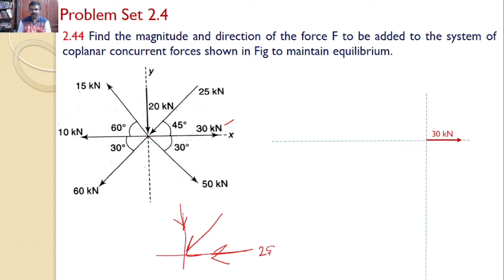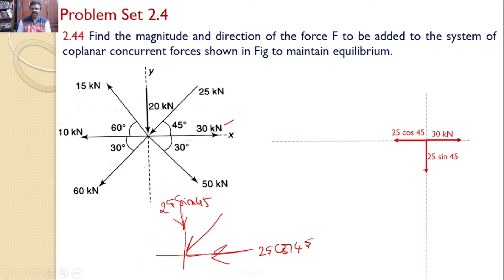The 25 kN force makes an angle of 45°. So the horizontal component is 25 cos 45° and the vertical component is 25 sin 45°. Hence, the x-axis component is 25 cos 45° and the y-axis component is 25 sin 45°. This y-component is downwards and the x-component is towards the left side.